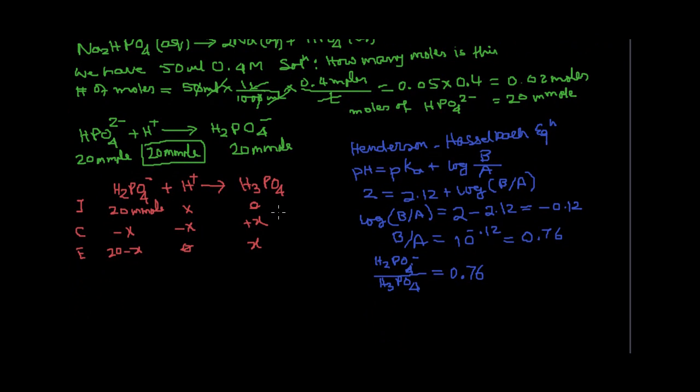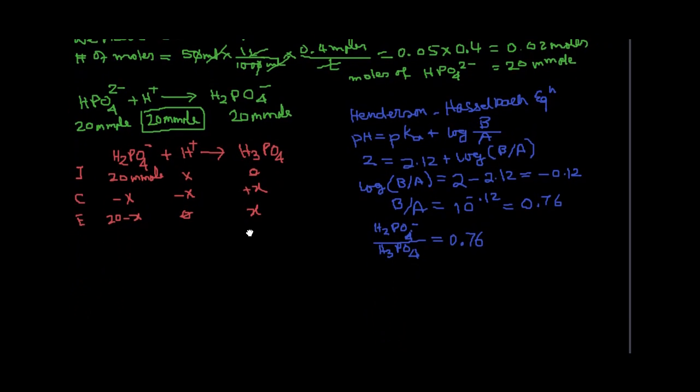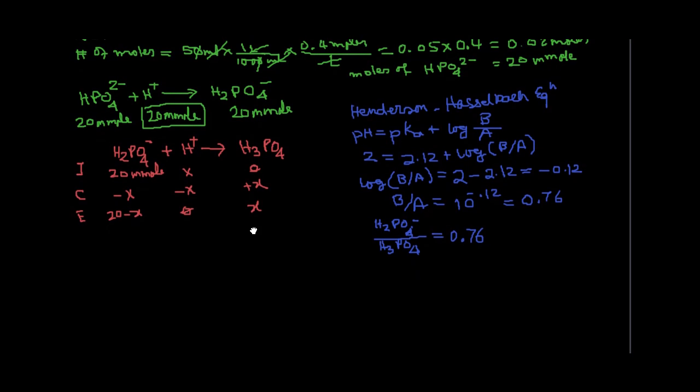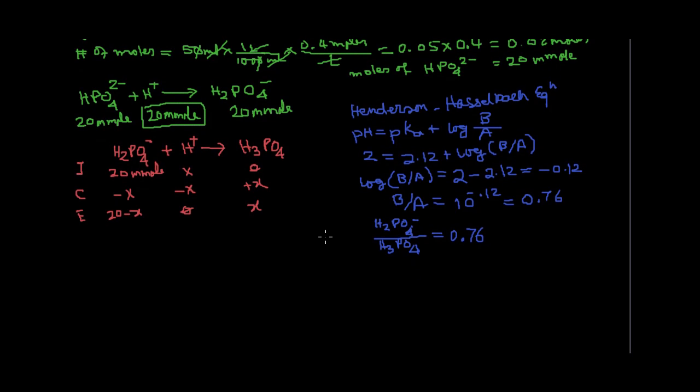As you can see, we have already calculated the concentration of H2PO4 minus, which is 20 minus x. So we write 20 minus x divided by the new H3PO4 that got created as x, and that is equal to 0.76.